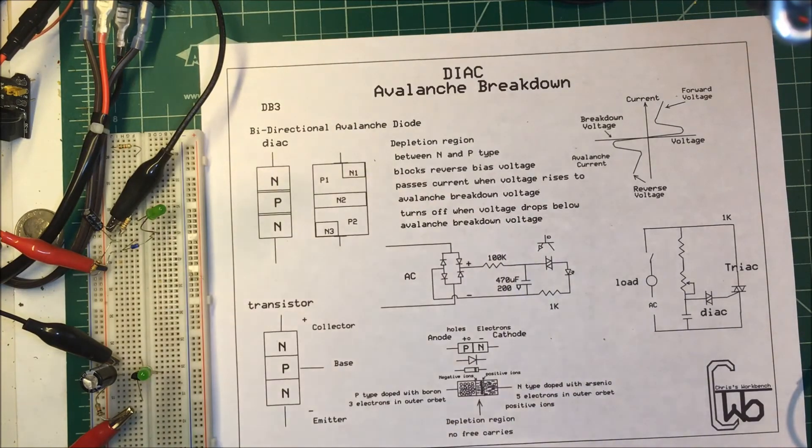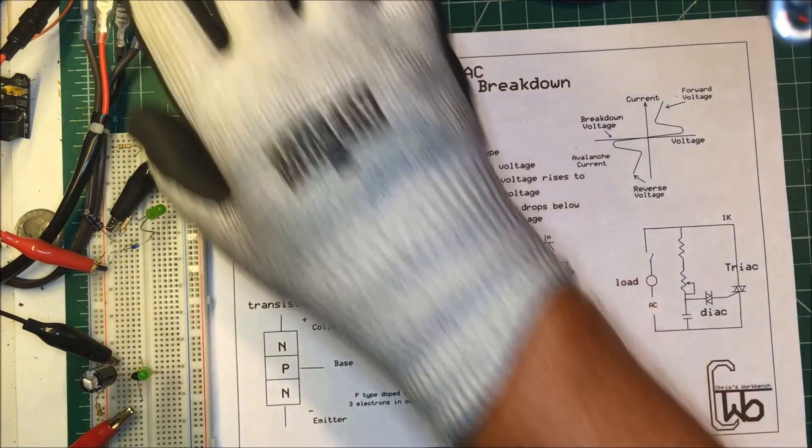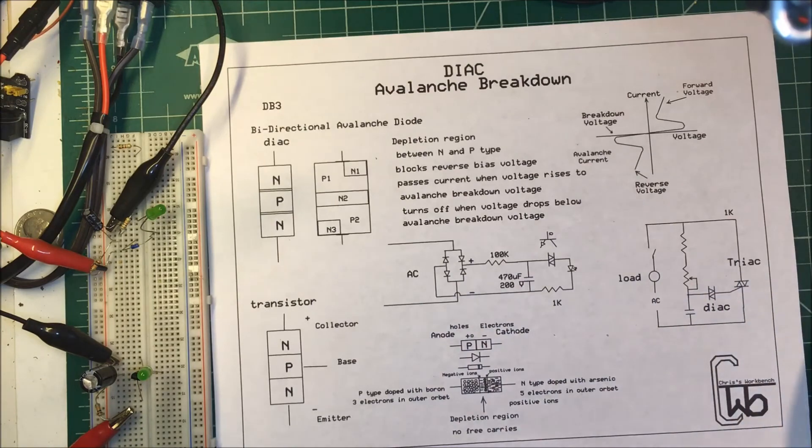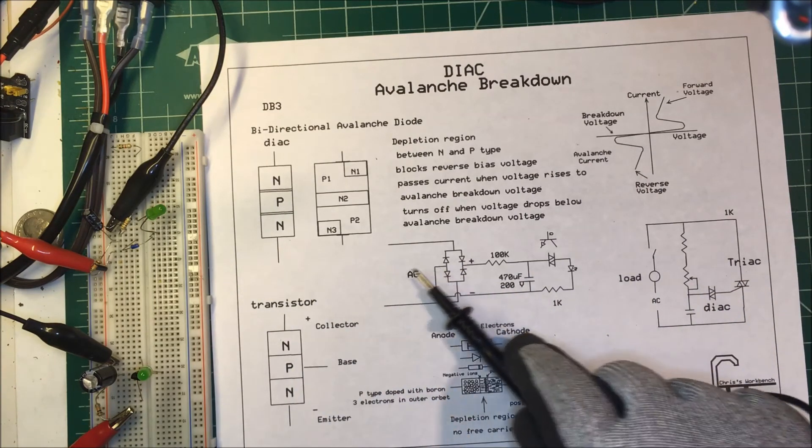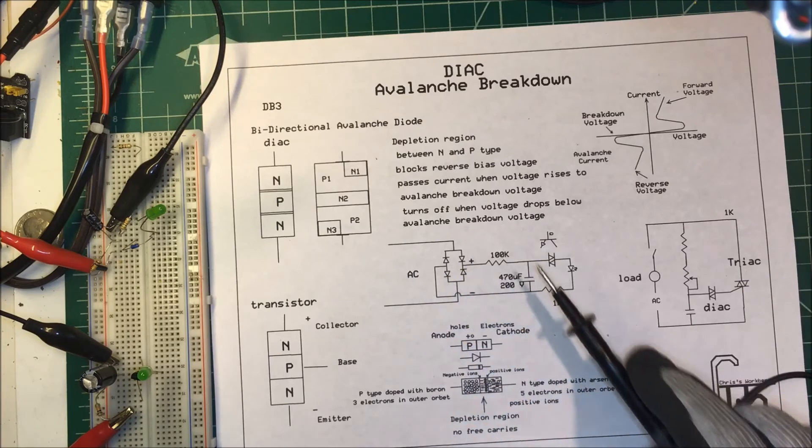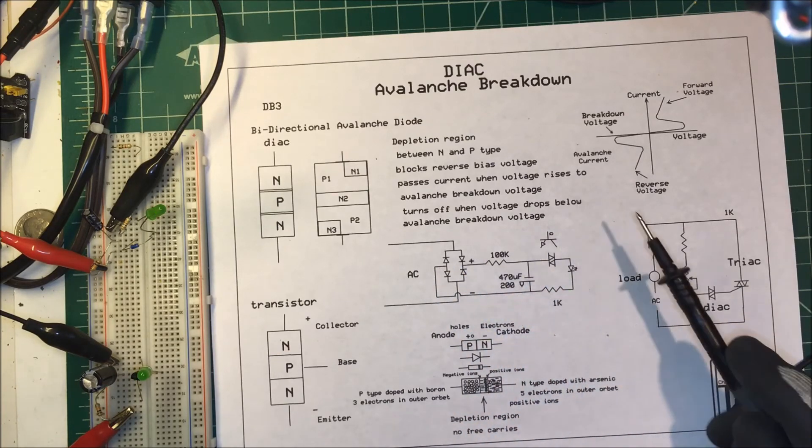Obviously if I actually put my scope on there I wouldn't have a scope anymore. So you have to be very careful when you're using two different power supplies, especially when you're using a variac. Even though this is DC here I'm getting some AC off of there, 104 volts to ground.